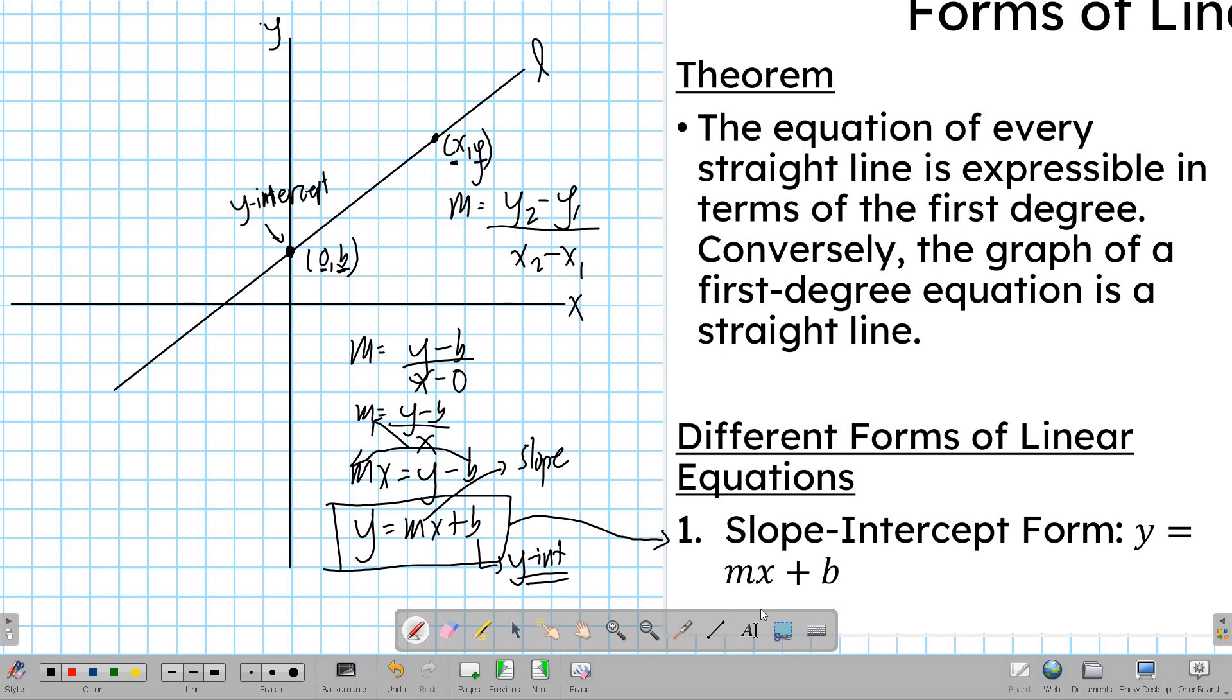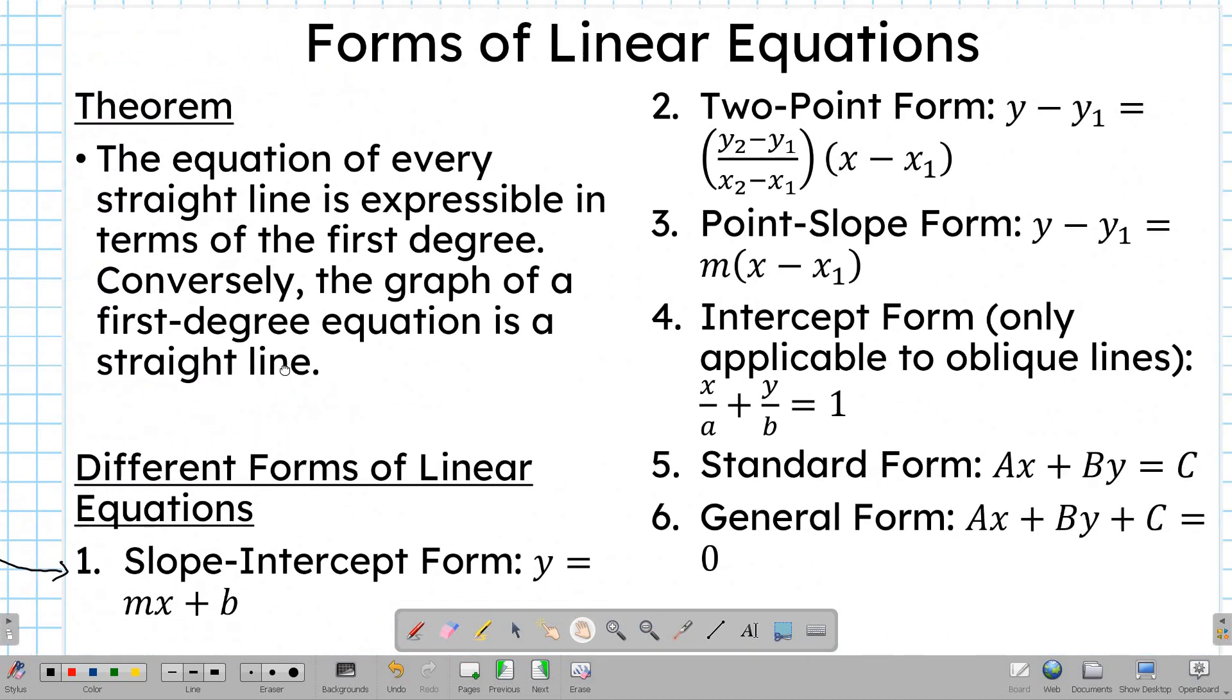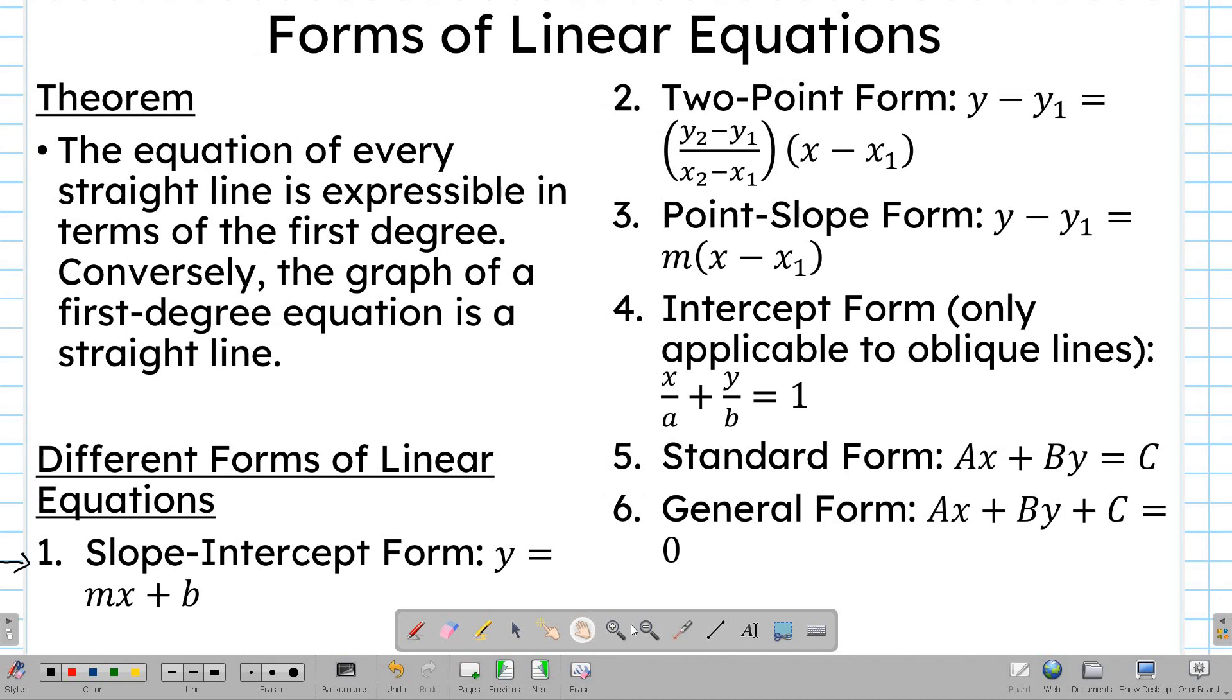That's one form of linear equation. There are many other forms of linear equation. Apart from the slope-intercept form y equals mx plus b, you can also write the equation of a line if you're given two points following this formula: the two-point form. When two points are given and one is not the y-intercept, this is what we'll use. y and x are variables; the ones that are numbers or constants are y₁, x₁, y₂, x₂.